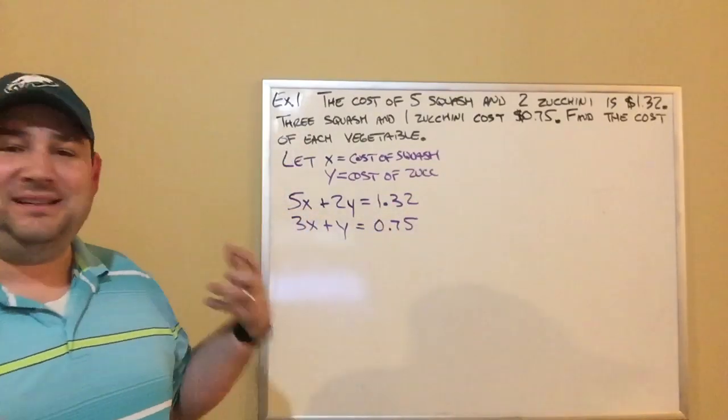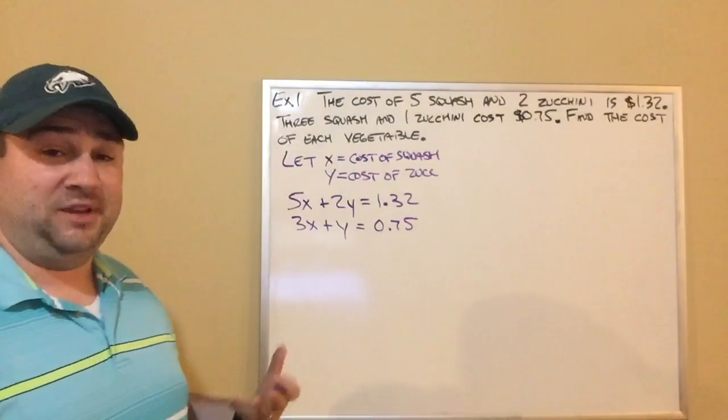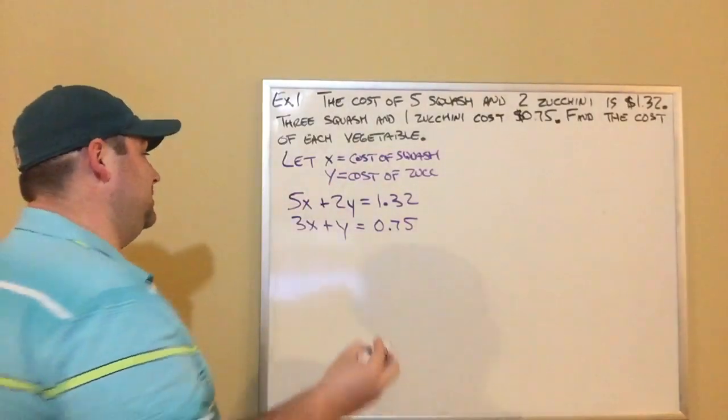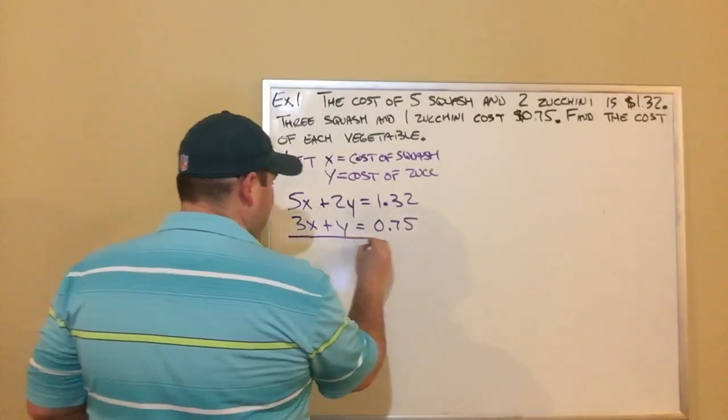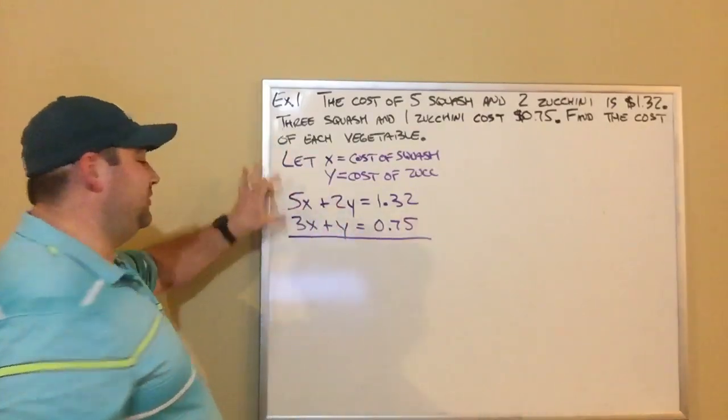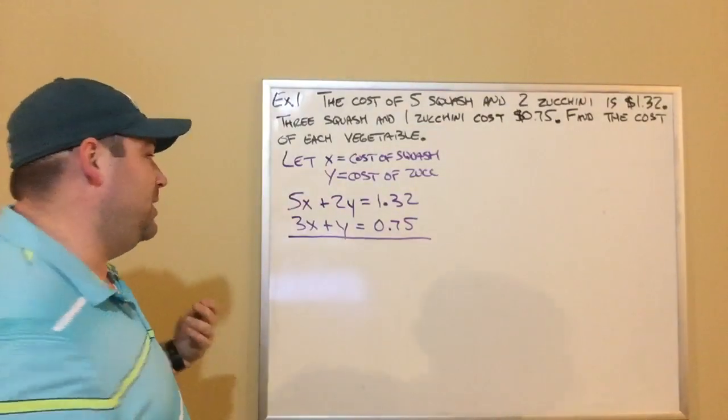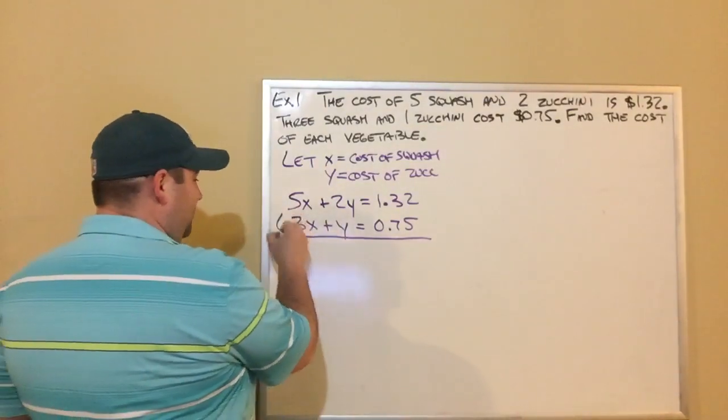Now, if you look at this, this doesn't look any different than what we were doing when we were doing the elimination method. We got our X's and our Y's lined up so we can do the elimination method. So I'm going to look at this. My coefficients, the numbers in front of the X's, the numbers in front of the Y's, they're not the same. So I'm going to have to multiply one of them. I look at the second one. I know if I multiply it by two, I'm going to end up with a 2Y, which is what I want.